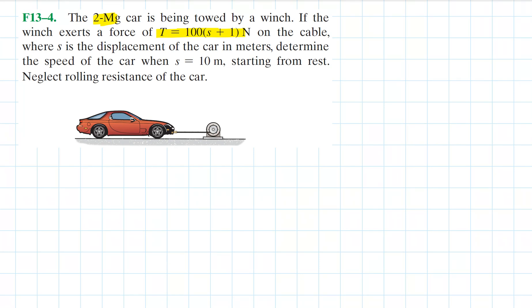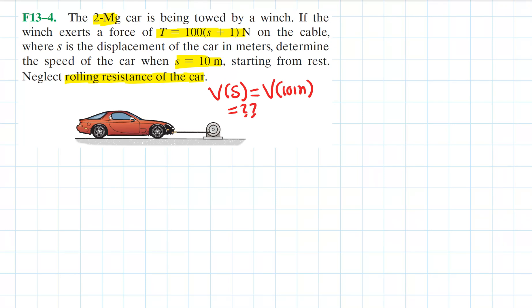The car starts from rest. We are told to neglect rolling resistance of the car, which means we are not considering friction. What we are asked in this problem is to find the velocity as a function of position — specifically, when the position is at 10 meters, we want to know the value of the velocity.